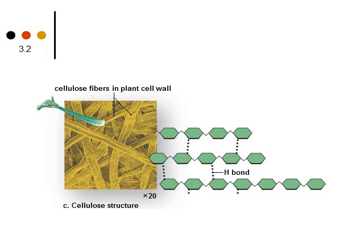Cellulose is more used for structure in plants. Cellulose is very, very highly structured — you see the green monomers in lines, and you also see hydrogen bonding between the long lines of cellulose. And this, again, is fiber.